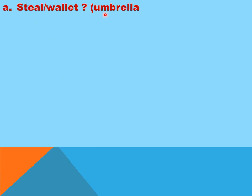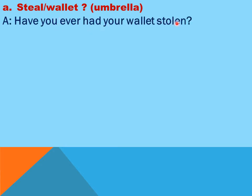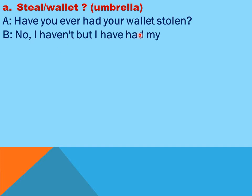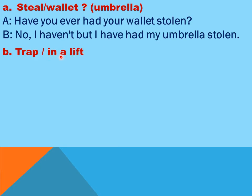For the wallet and umbrella example: A says 'Have you ever had your wallet stolen?' B says 'No, I haven't, but I have had my umbrella stolen.'